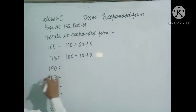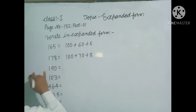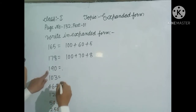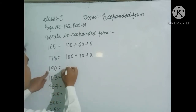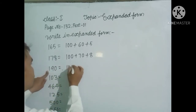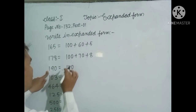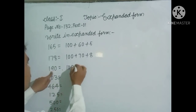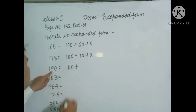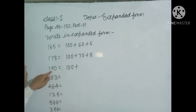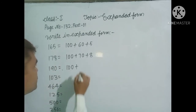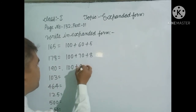Next question: in the hundreds digit, 1 hundred, so write down 100. The tens digit is 9 tens, so write down 90.